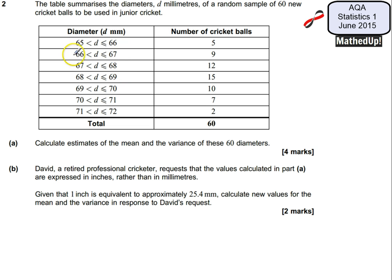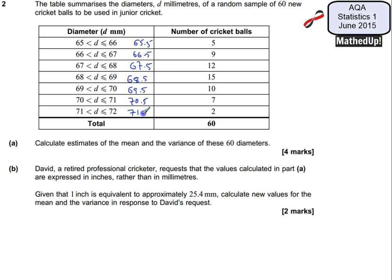We're estimating the mean because we don't know the actual diameter — we just know that it's between 65 and 66 in this first case. So the first thing I'm going to do is estimate a sensible value for the diameter by taking the midpoint. So instead of 65 to 66 we're going to use 65.5, then 66.5, and so on: 67.5, 68.5, 69.5, 70.5, and 71.5.